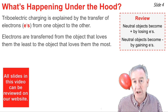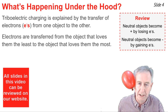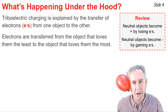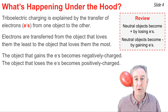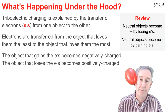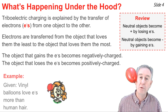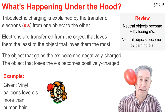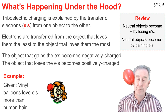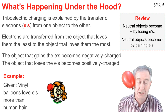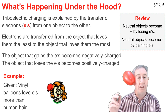So in the triboelectric charging process, electrons are transferred from the material that loves them the least to the material that loves them the most. The result is that one object gains electrons and becomes charged negatively, and the other object loses electrons and becomes charged positively. The example we've been talking about is the rubbing of a vinyl balloon on a human ear, and we happen to know from looking it up on the best resources that the material vinyl loves electrons more than the material human ear.